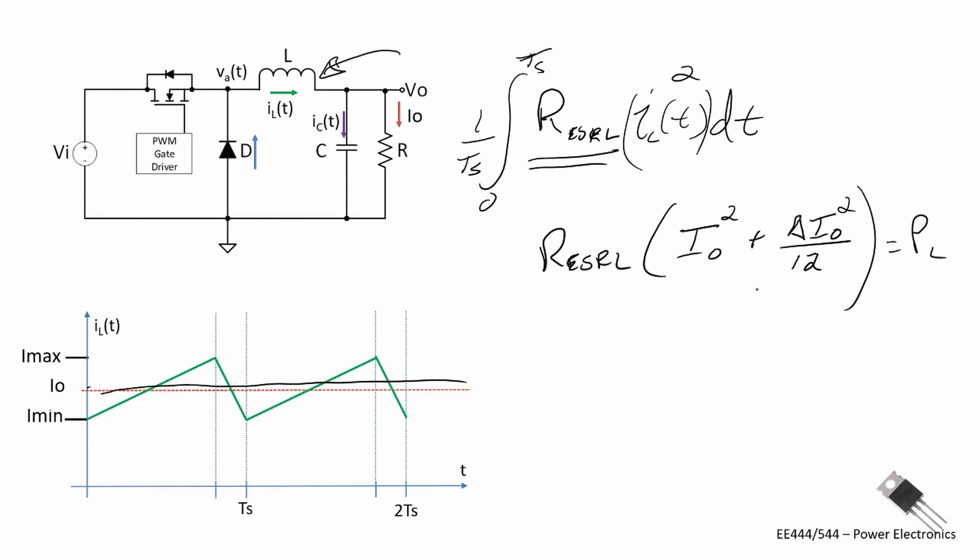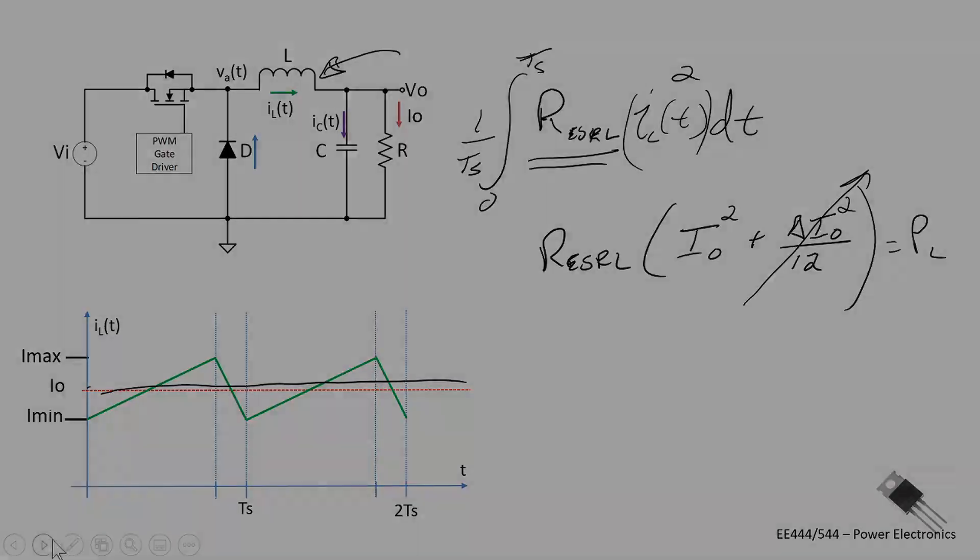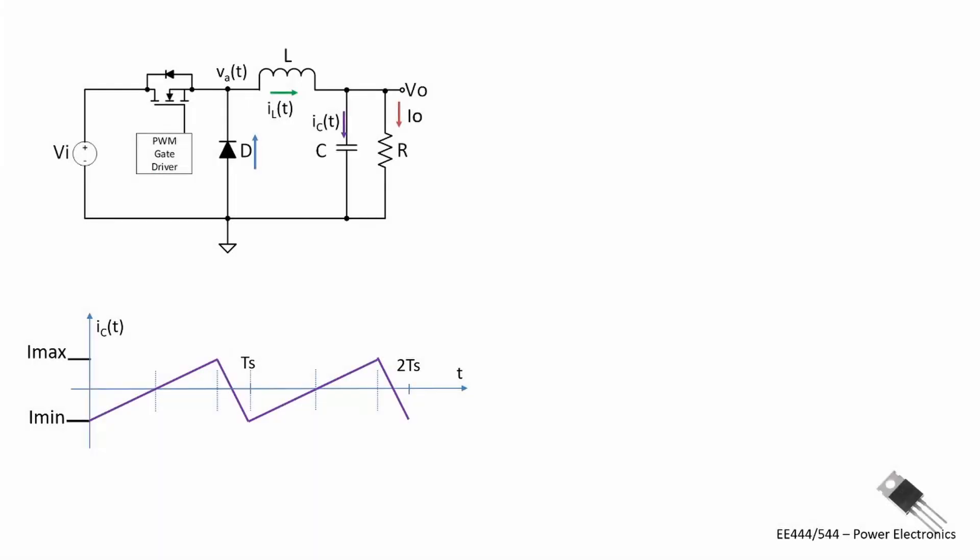Now, for all practical purposes, we typically ignore that one. But it's there. And so we should keep account for it. The loss in the capacitor is slightly less than the loss in the inductor. But again, it all depends on the equivalent series resistance of this capacitor. And notice we have a sawtooth type ripple through the capacitor.